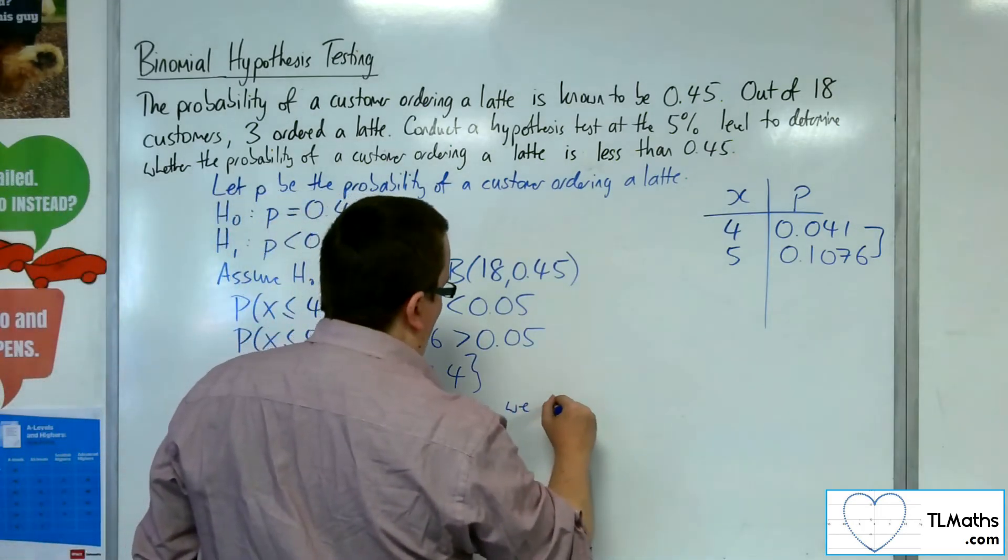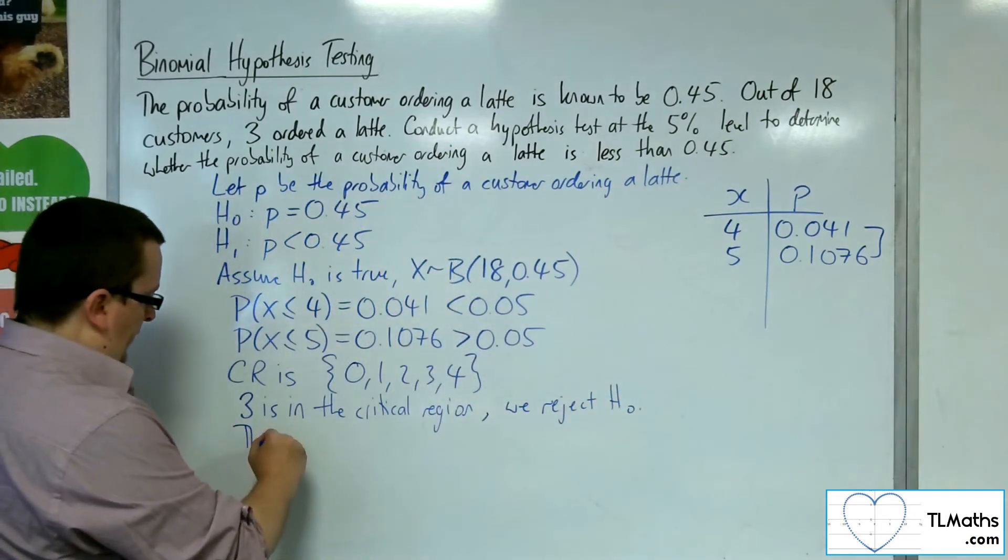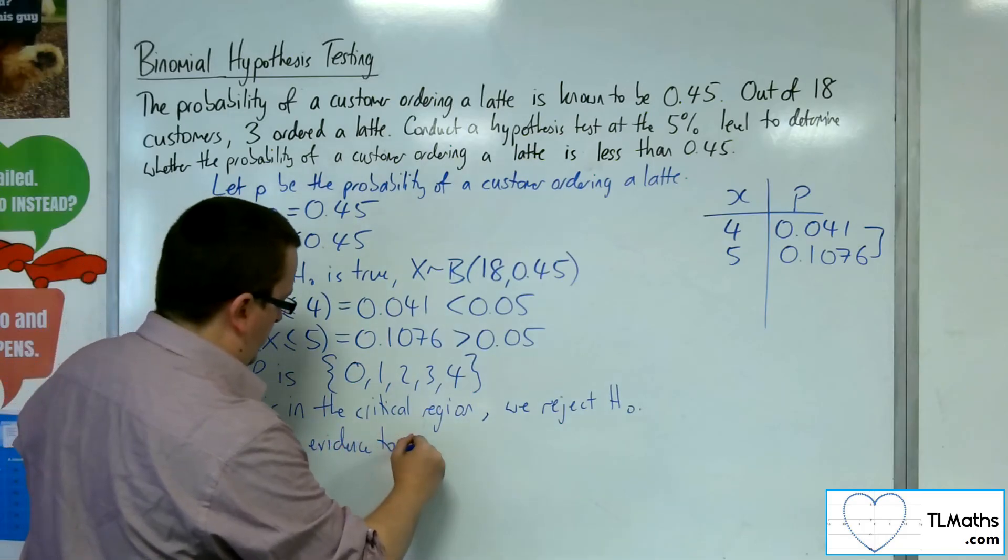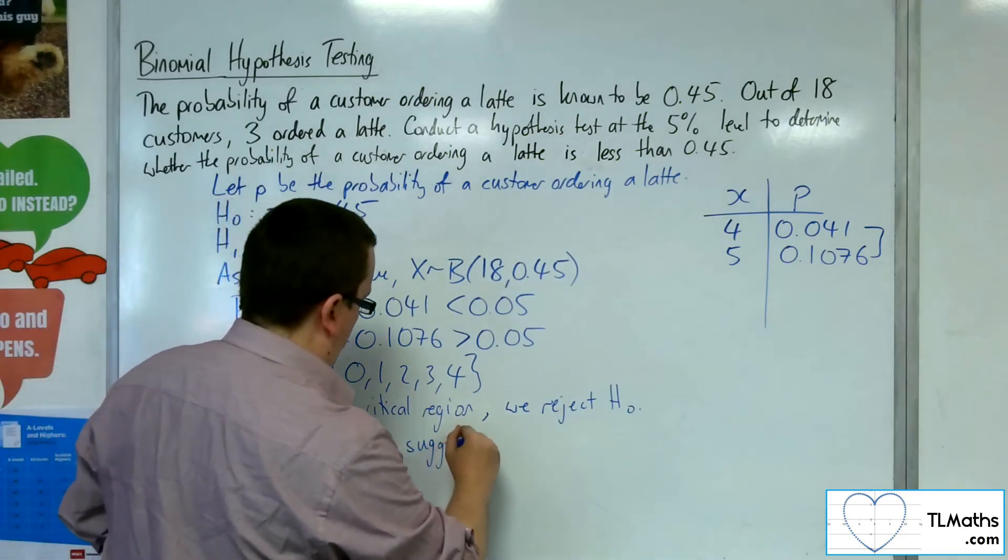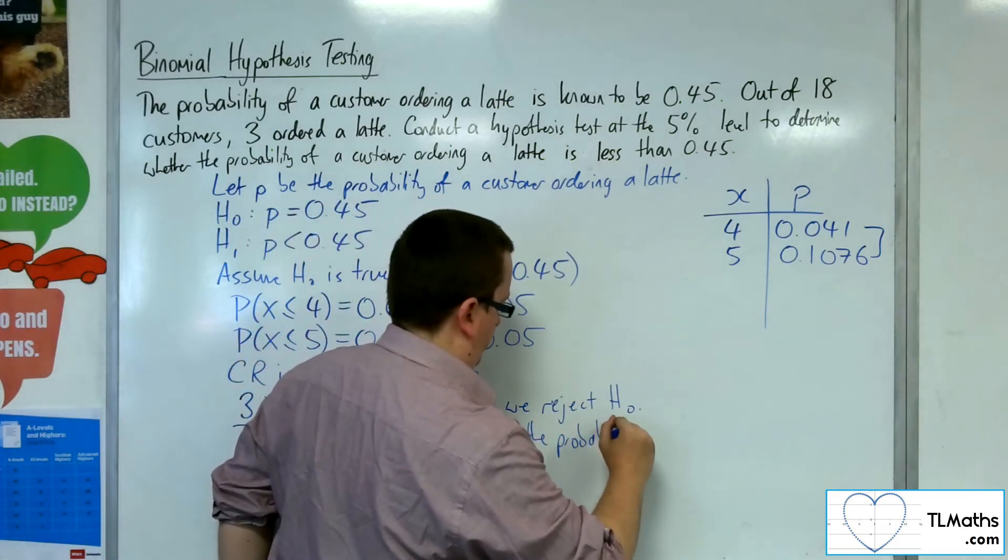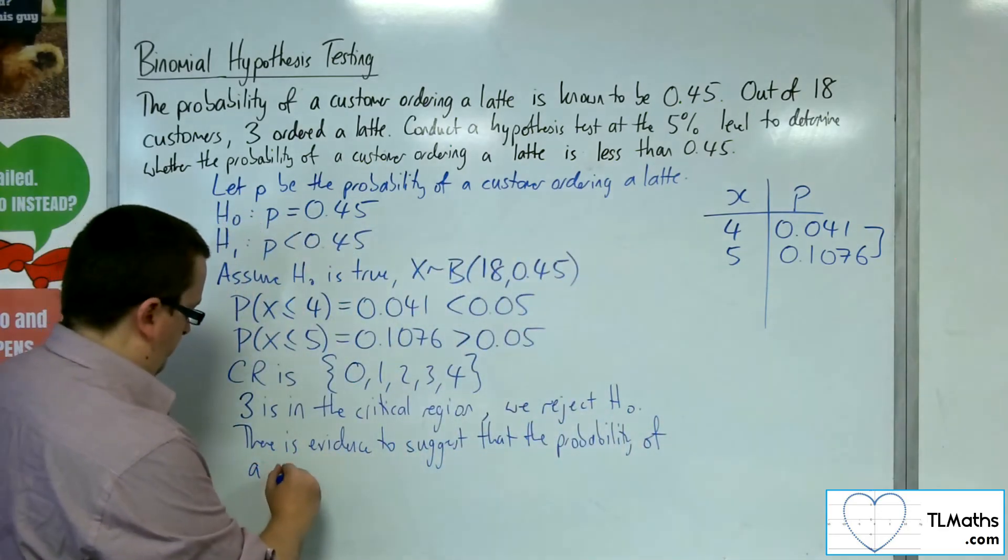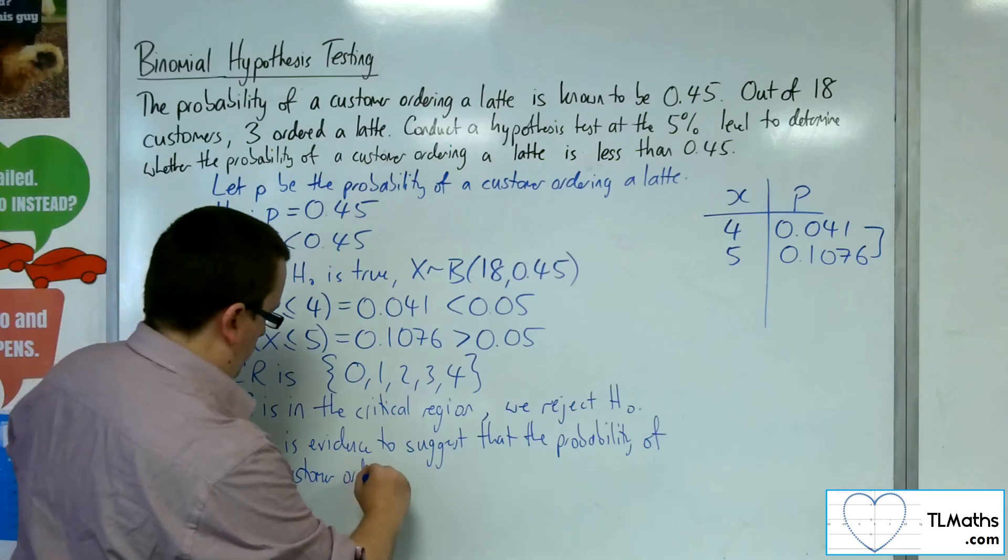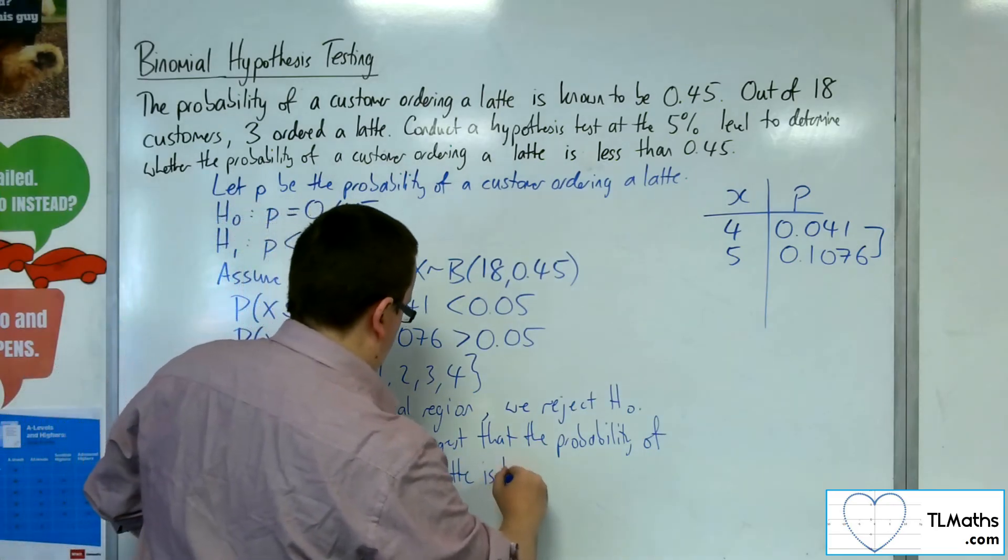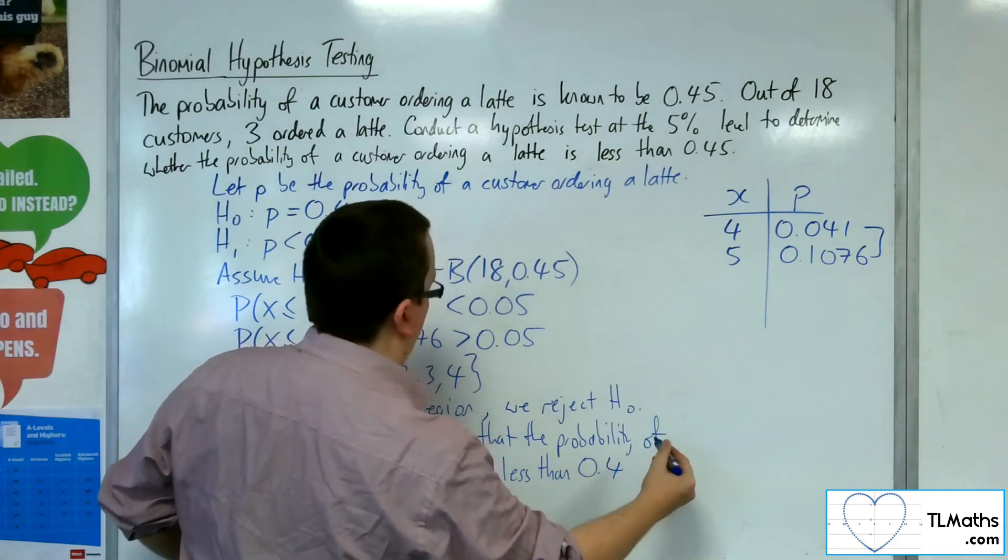We reject the null hypothesis. There is evidence to suggest that the probability of a customer ordering a latte is less than 0.45.